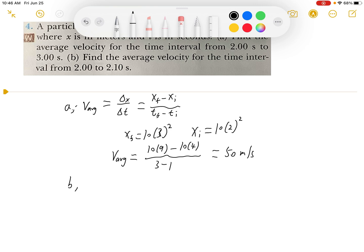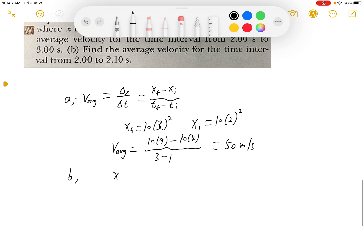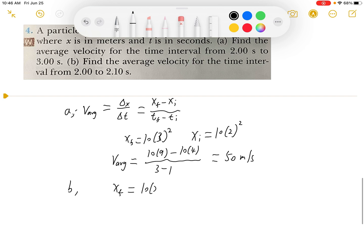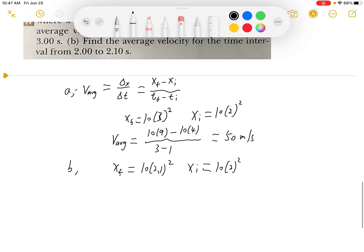So part B, we will do the same way. The final position is 10 times 2.1 squared and the initial position is 10 times 2 squared. So we will have average velocity equals 10 times...